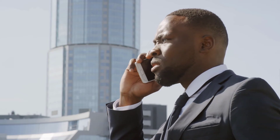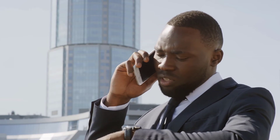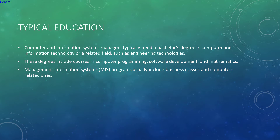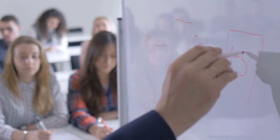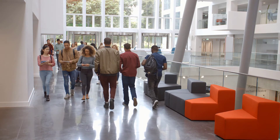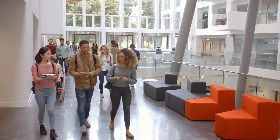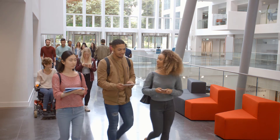Education: Typically, a bachelor's degree in computer or information science plus related work experience is required. Many computer and information systems managers also have a graduate degree. They typically need a bachelor's degree in computer and information technology or a related field, such as engineering technologies. These degrees include courses in computer programming, software development, and mathematics. Management information systems programs usually include business and computer-related courses. Many organizations require graduate degrees; a Master of Business Administration (MBA) is standard and takes two years beyond the undergraduate level to complete.